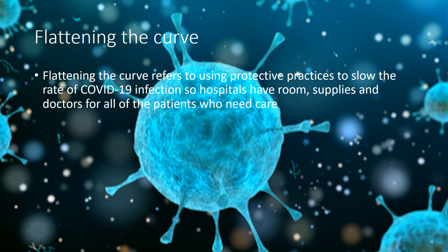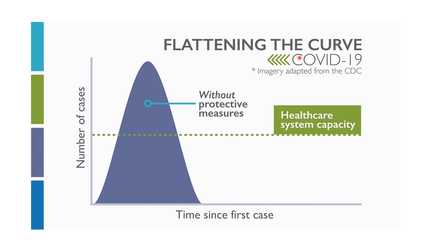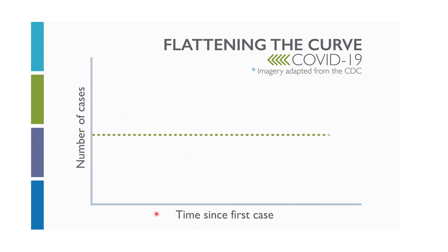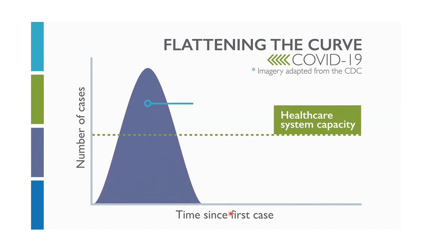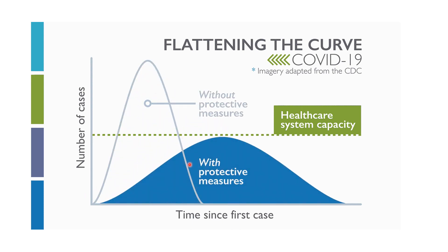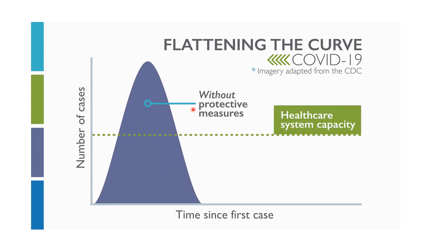Flattening the curve refers to using protective practices to slow the rate of COVID-19 infection so that hospitals have enough room, supplies, and doctors for all patients who need care. This GIF diagram represents the flattening of the curve. One axis represents the number of cases and the other represents time since the first case.